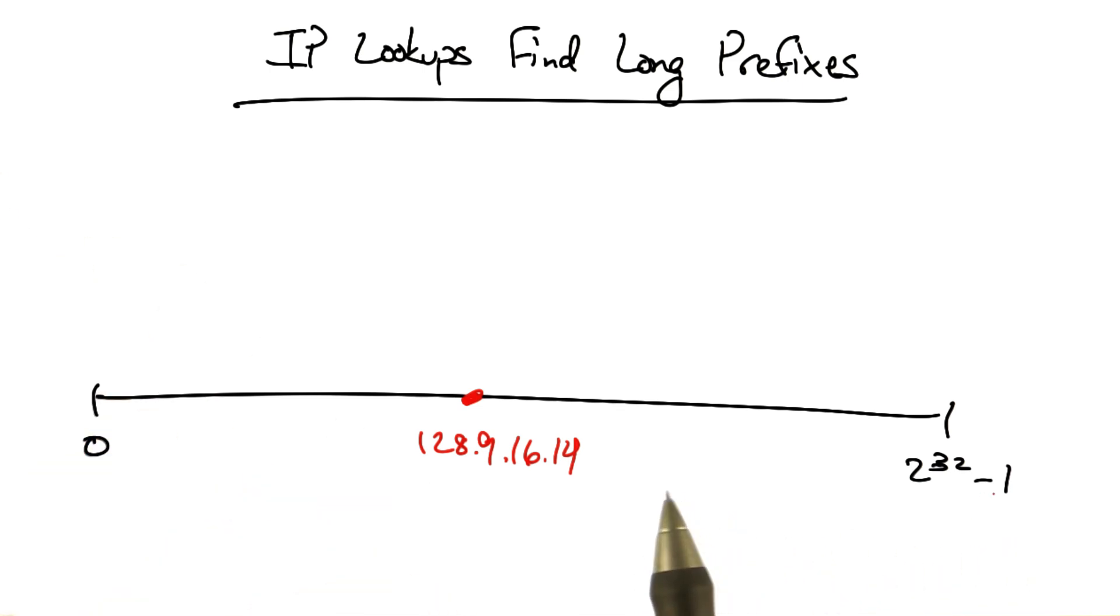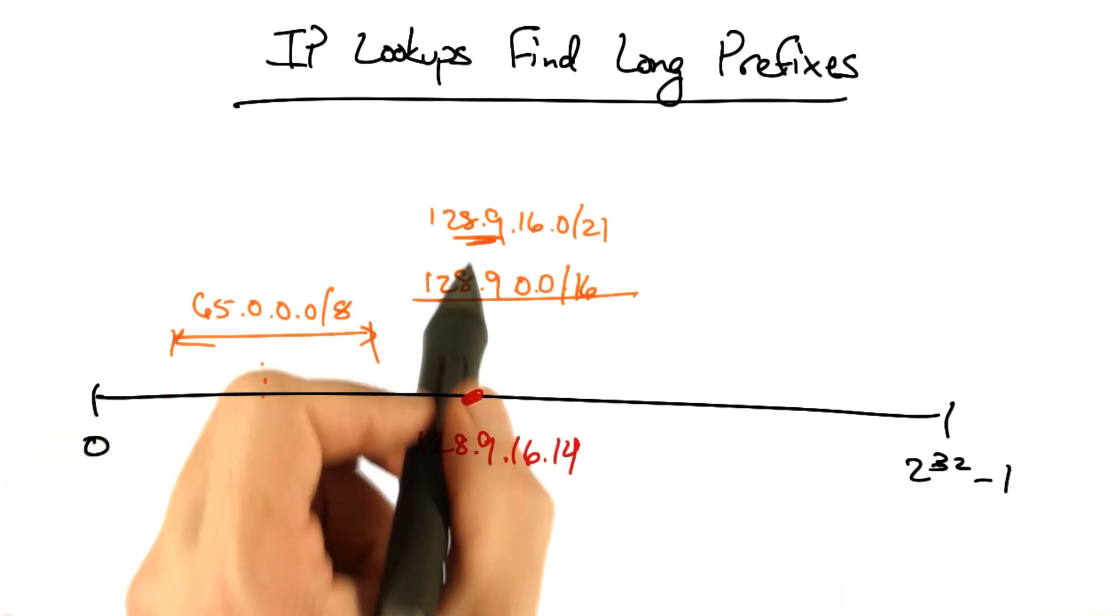Each prefix represents a smaller range inside this larger range of 32-bit numbers. Obviously, this is not to scale. Now these ranges might be overlapping,